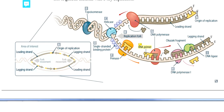This is the origin of replication where we can see the synthesis of the RNA primer. For DNA replication we need an RNA primer, whereas for RNA synthesis you do not need any RNA primer.